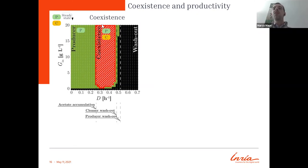Then we have a middle regime where we have coexistence. So there is acetate in the system that is secreted by the producer, and this sustains the growth of the cleaner, and we can have producer and cleaner together. And finally, we have washout when the dilution rate is too high to sustain the maximal growth rate of the two strains.